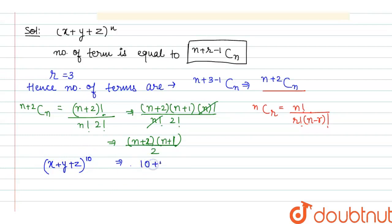We can write it, 10 plus 2 into 10 plus 1 divided by 2. It means 10 plus 2, 12 into 11 divided by 2.